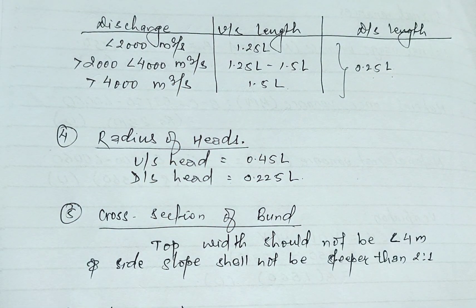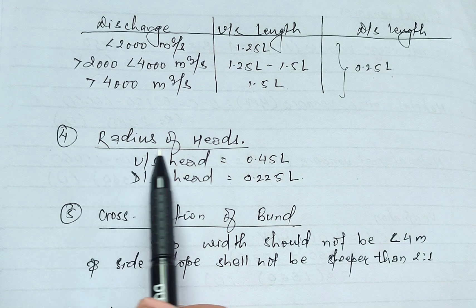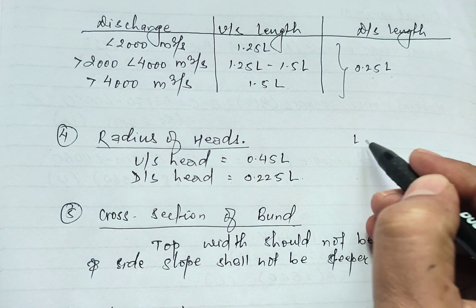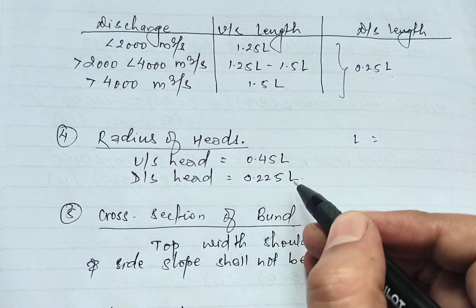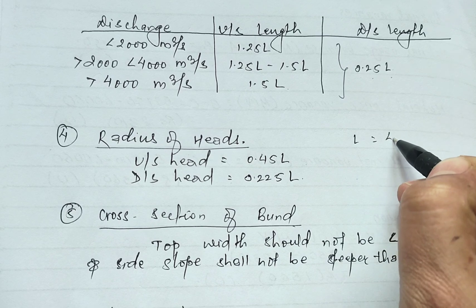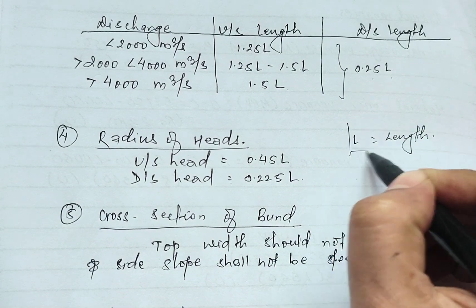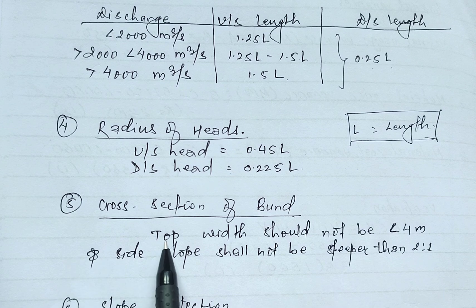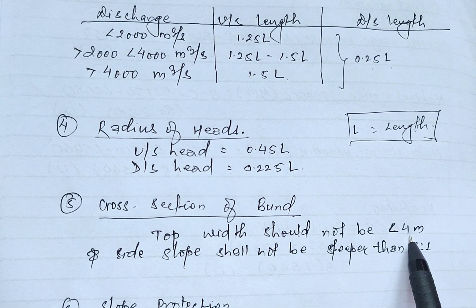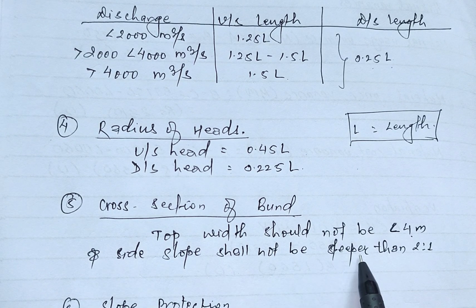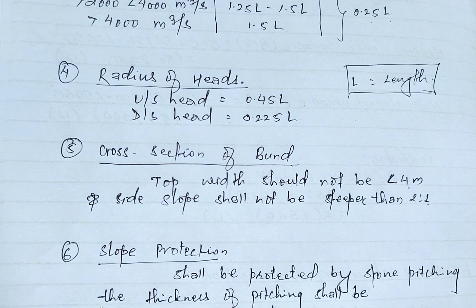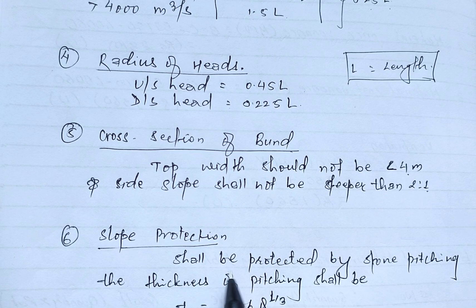In the fourth step, we calculate the radius of the heads: upstream head radius equals 0.45L, and downstream head radius equals 0.225L, where L is the length of the guide bank. In the fifth step, the cross section of the bund is defined: top width should not be less than 4 meters and side slope shall not be steeper than 2:1.